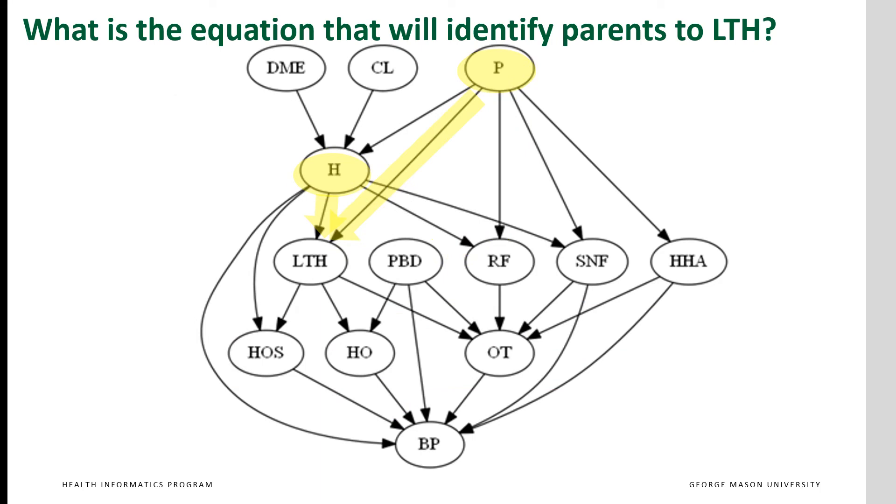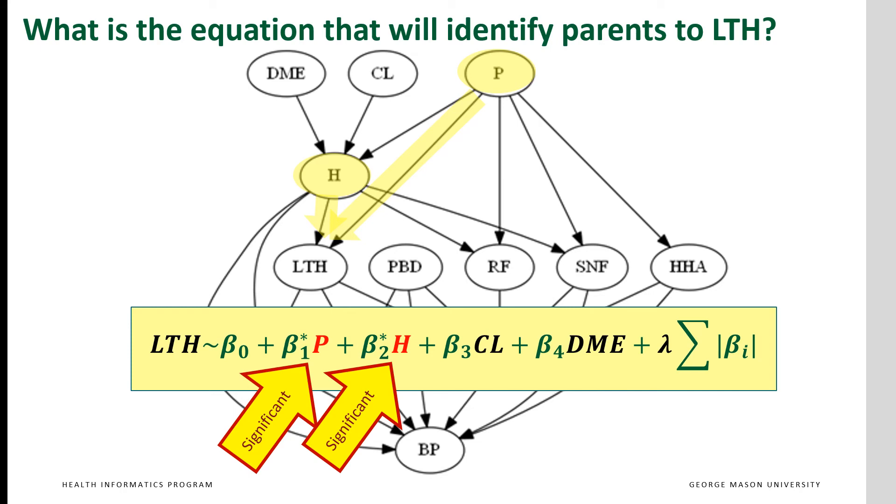Let us try another example. What is the equation that will identify parents to LTH? The response variable is LTH. The independent variables are all the variables that occur before LTH, which is the same set of variables that occur before RF. We now expect that LASSO will identify P and H as significant. CL and DME are not significant.